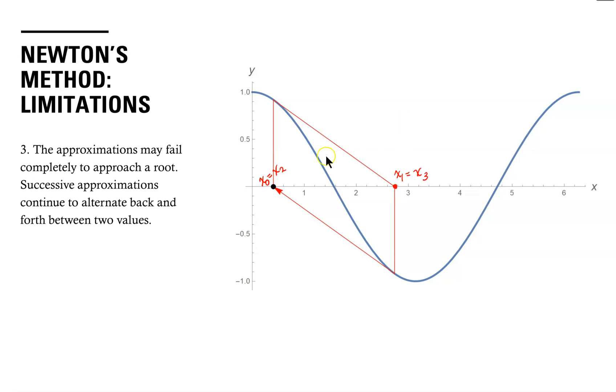And so forth. So you get this cycling between the two values. This can be fixed by making your first approximation appropriately close to what the actual value of the root is.